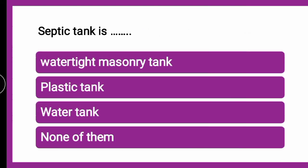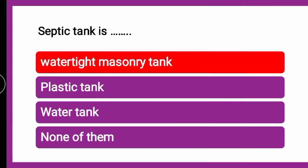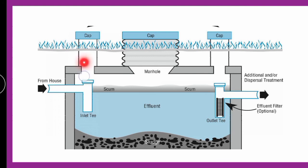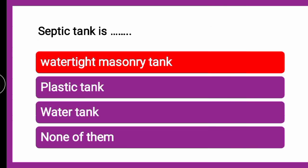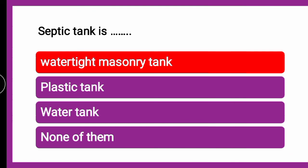The next question: Septic tank is — a watertight masonry tank, a plastic tank, or a water tank? The correct answer is a watertight masonry tank. As seen in the diagram, it has a cement concrete lid and brick layer walls — this construction is called masonry. It is watertight, meaning water cannot leak from it. So a septic tank is a watertight masonry tank.